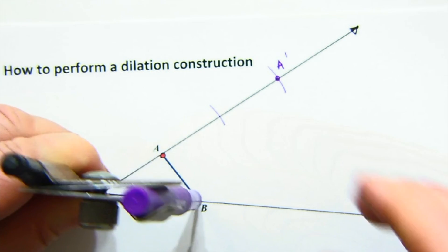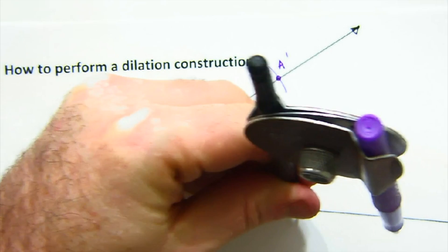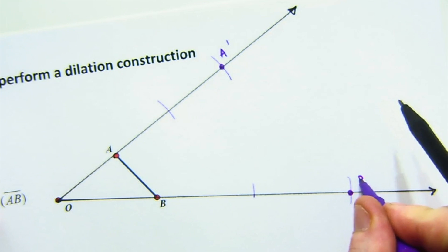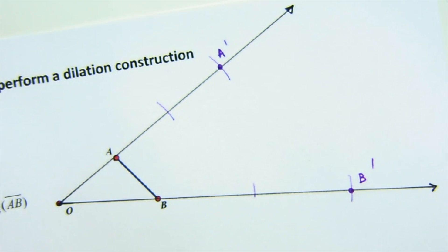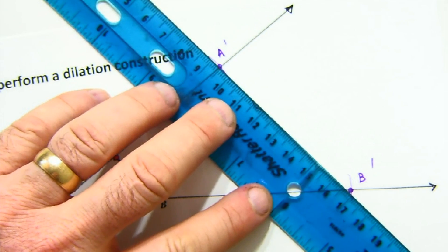And then B would do the same thing here. We would dilate it one, two, three. So B prime is out here, and we would connect our values A, A prime, B prime.